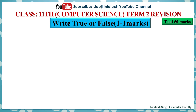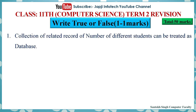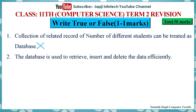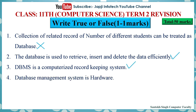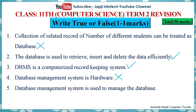Now we will learn about true or false. Each carries one mark. 1. Collection of related records of a number of different students can be treated as a database — False. 2. The database is used to retrieve, insert and delete data efficiently — True. 3. DBMS is a computerized record-keeping system — True. 4. Database management system is hardware — False. 5. Database management system is used to manage the database — True.